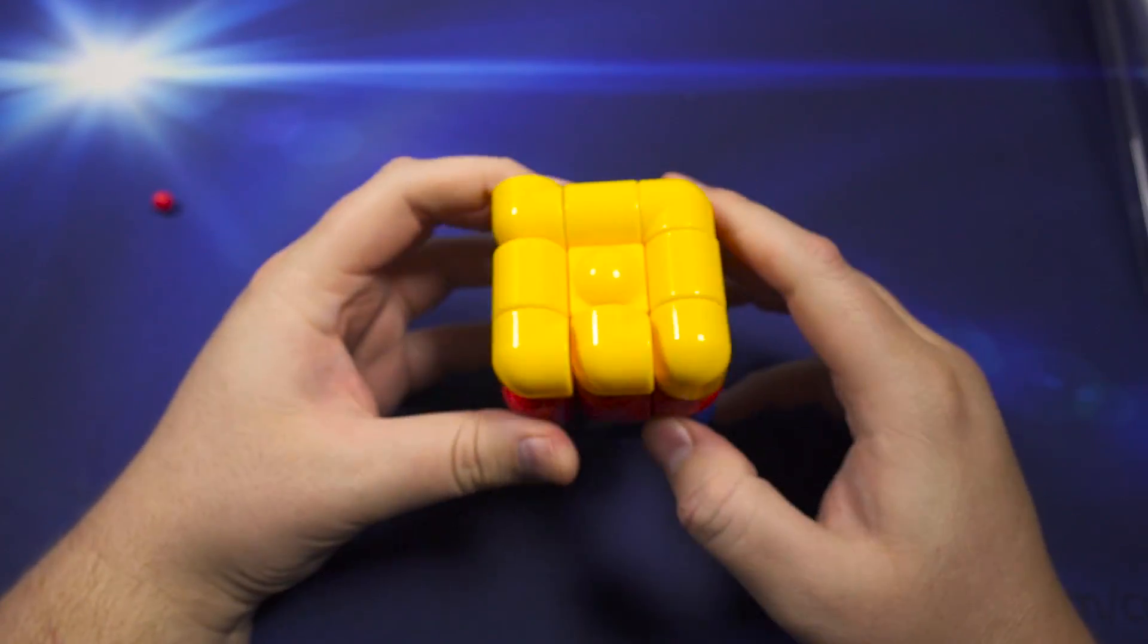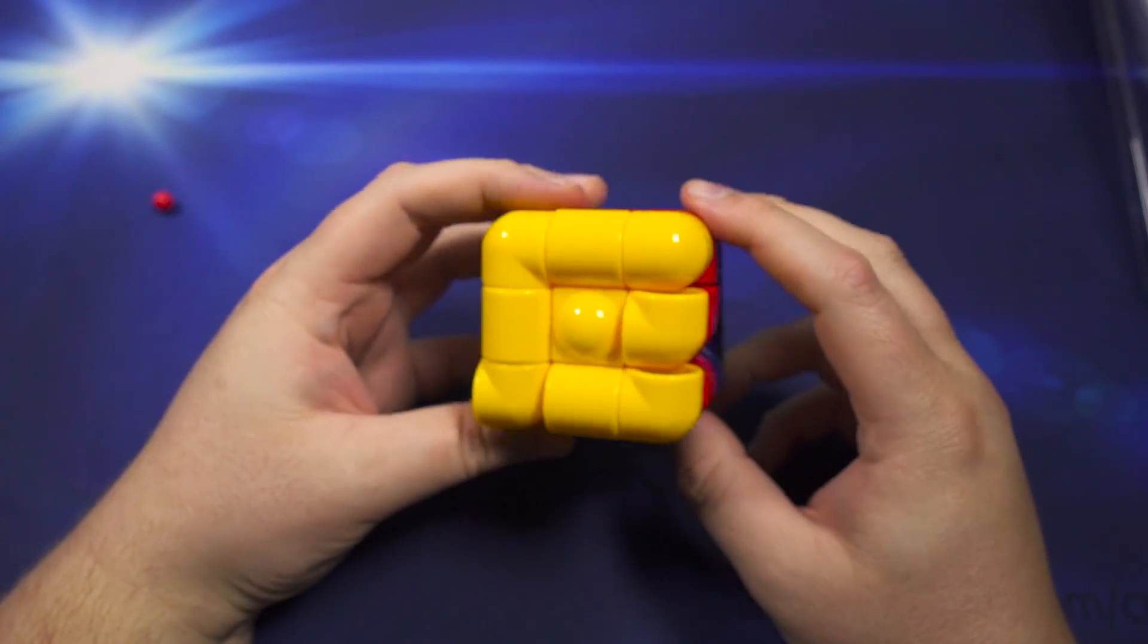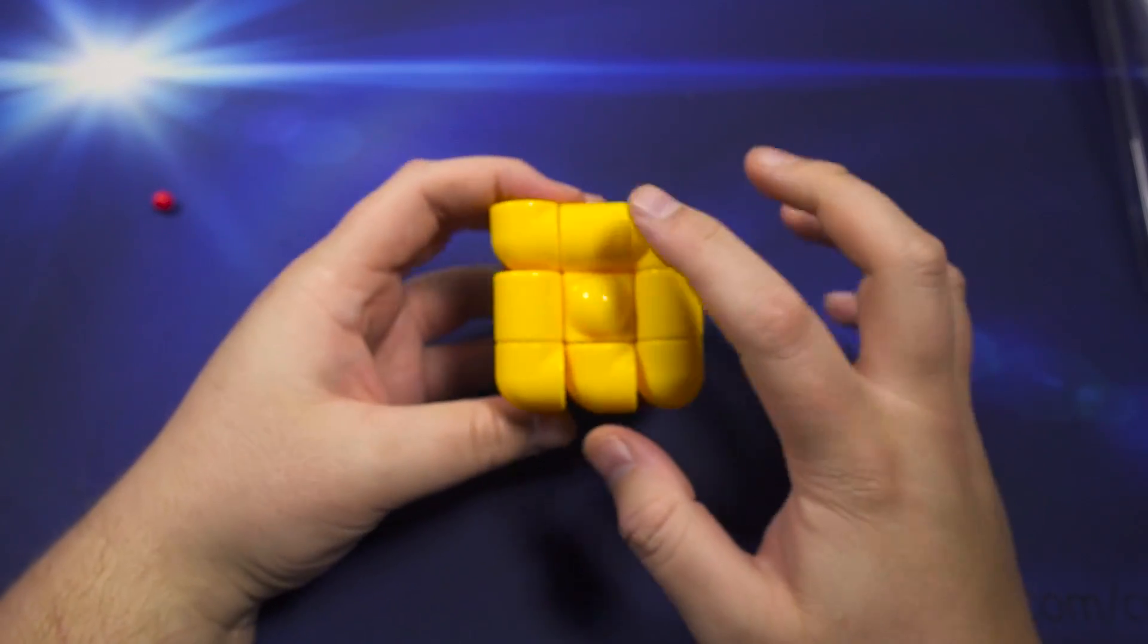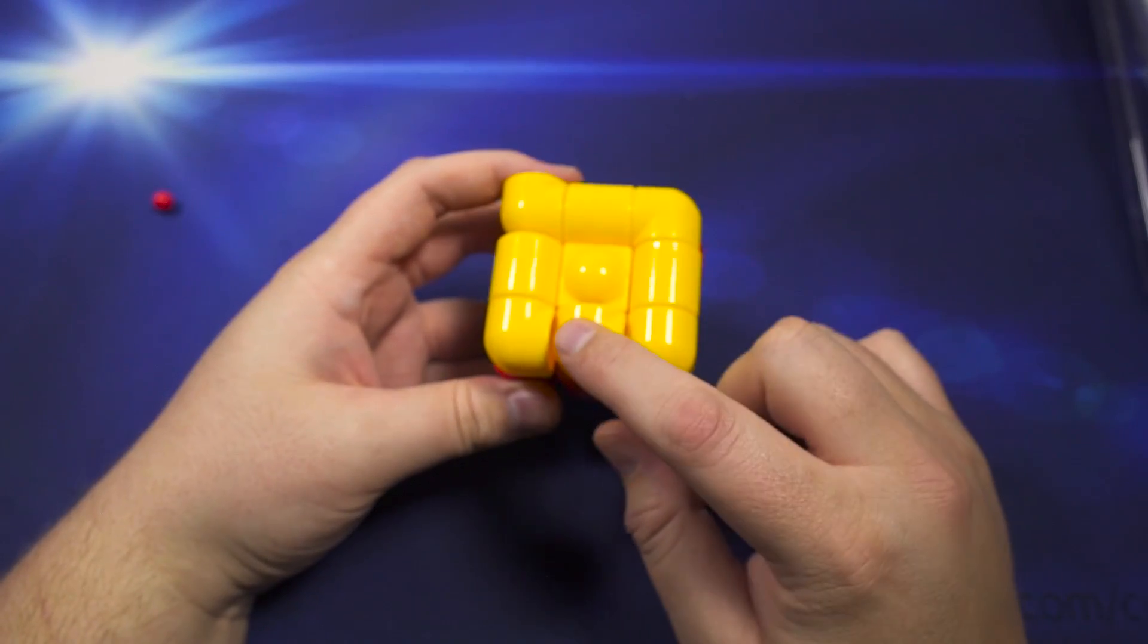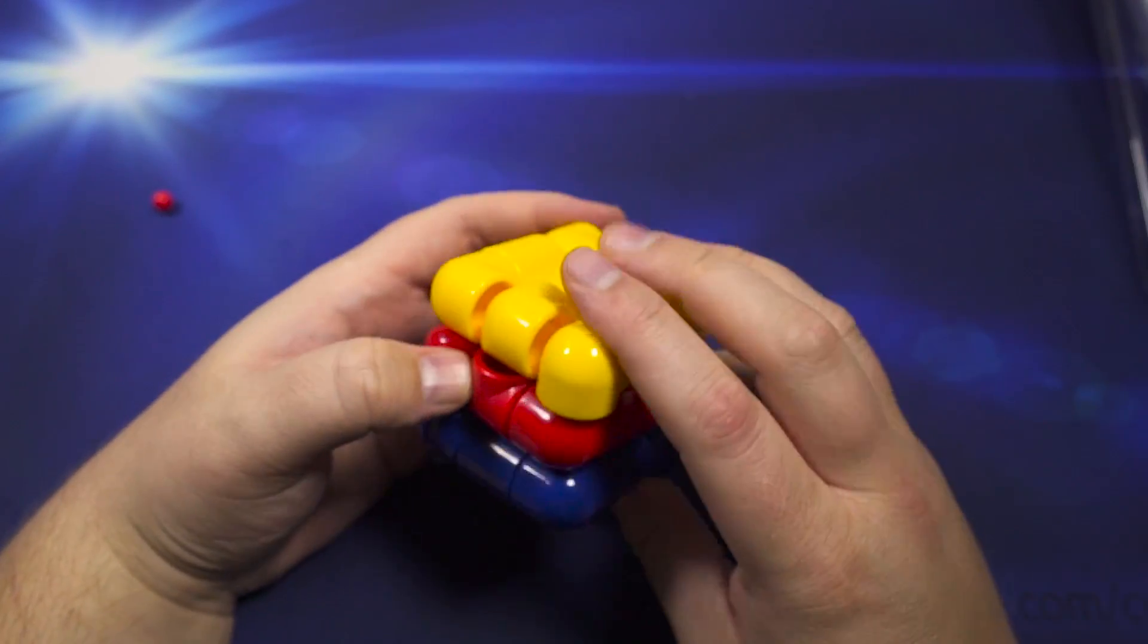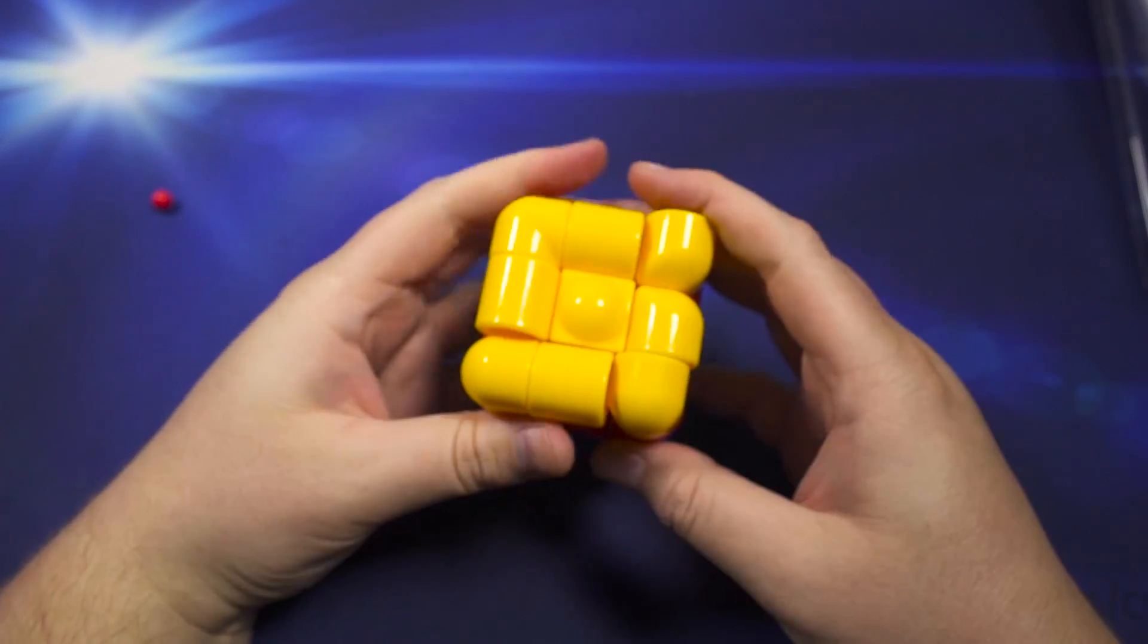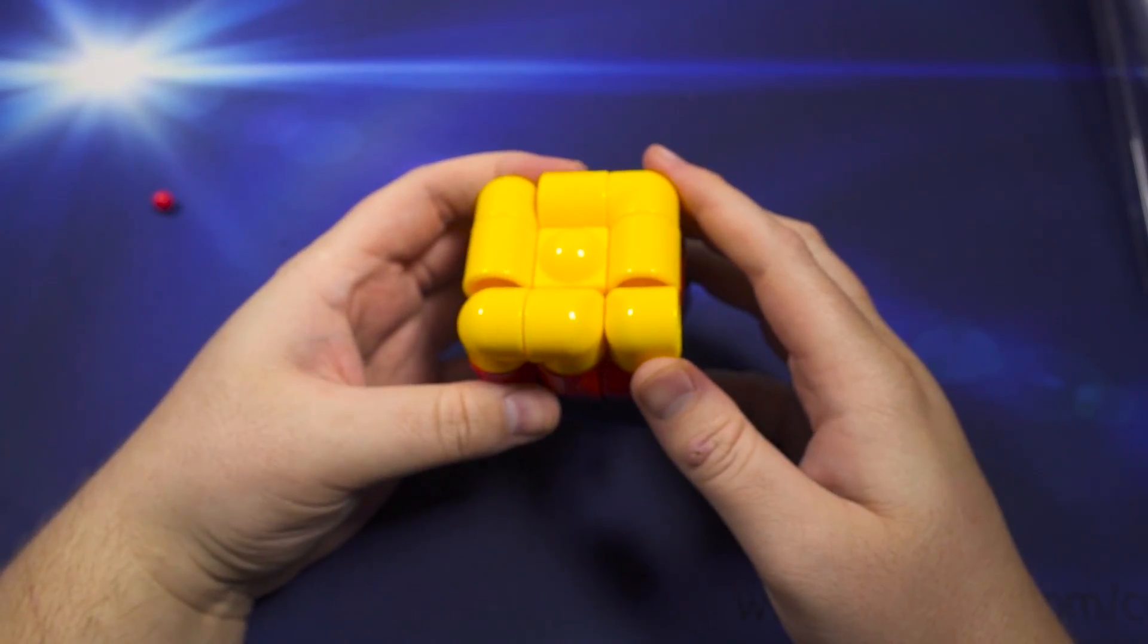Alright, now let's look at this last layer. What are we going to do here? First off, what we need to take a look at is edge orientation. As you can see, these don't really have an orientation. Whichever way they're in, they're going to work. But we need to worry about this one. So I will just do F sexy F prime, and then we're set up.